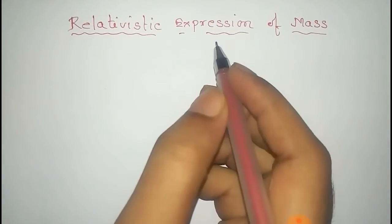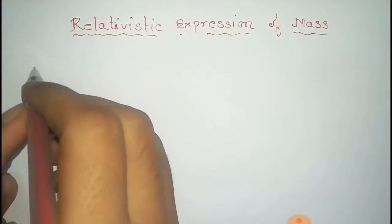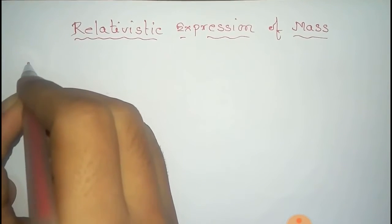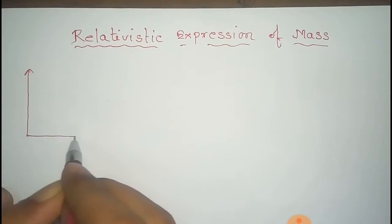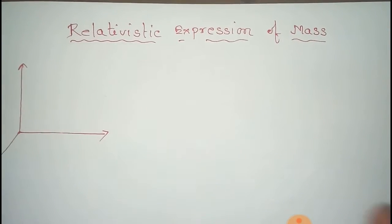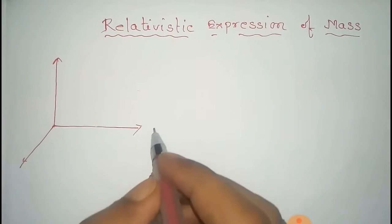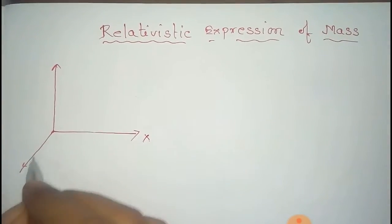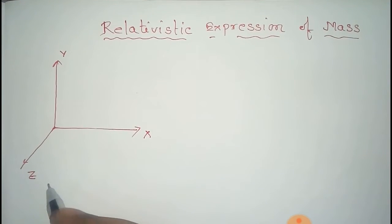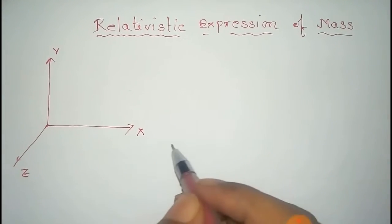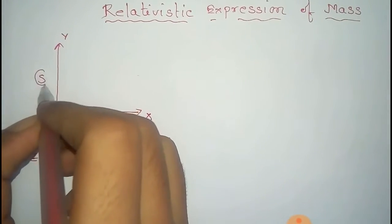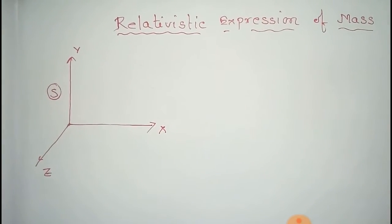In this video we will find the relativistic expression of mass, that is the velocity dependence of mass. First of all, consider a stationary frame with coordinates x, y, and z. We take this as the S frame.